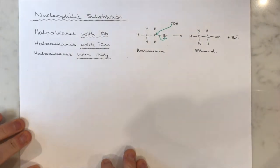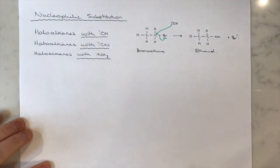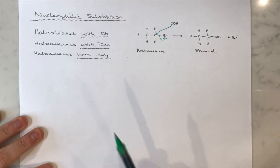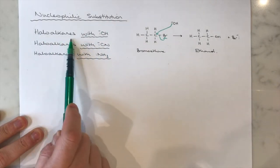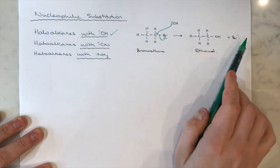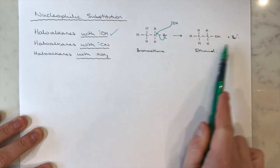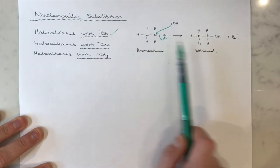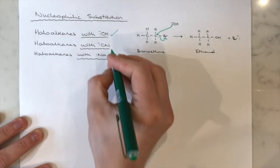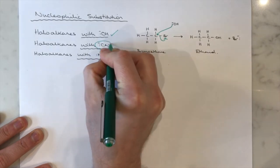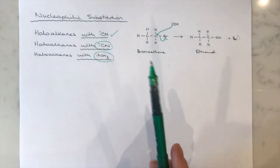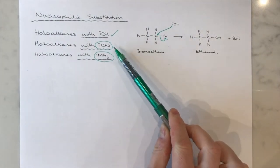We're going to look at the next stages of the nucleophilic substitution mechanism. You need to know this mechanism in three formats, and we've already done the first one. We've looked at nucleophilic substitution of a haloalkane using a hydroxide nucleophile — that's the version from my previous video clip, using bromoethane and turning it into ethanol. You also need to know the same mechanism with two other nucleophiles: a cyanide ion and ammonia.